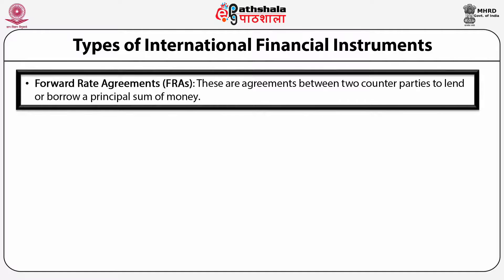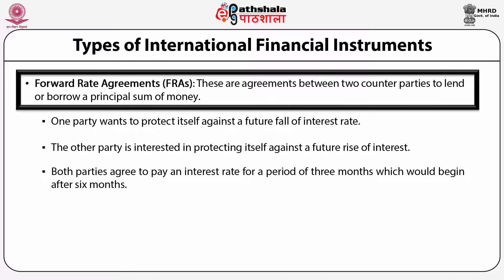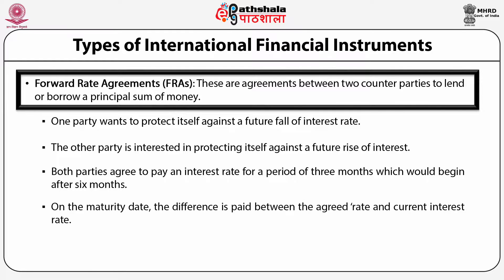Forward rate agreements: These are agreements between two counterparties to lend or borrow a principal sum of money. One party wants to protect itself against a future fall of interest rate, while the other party is interested in protecting itself against a future rise of interest. Both parties agree to pay an interest rate for a period of 3 months which would begin after 6 months. On the maturity date, the difference is paid between the agreed rate and the current interest rate. This is similar to a financial futures contract and has a fixed settlement date. The FRAs have a maximum trade denominated in US dollars.